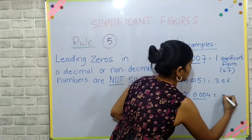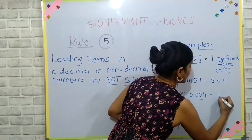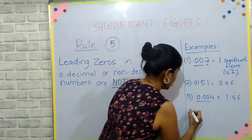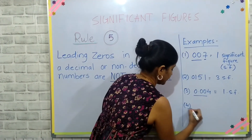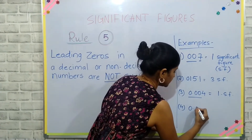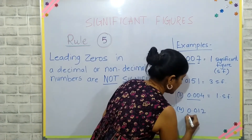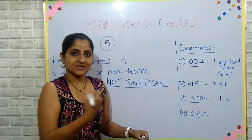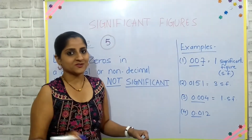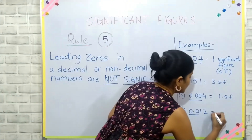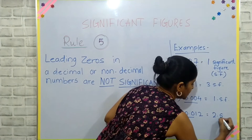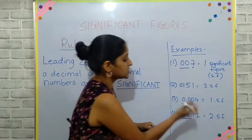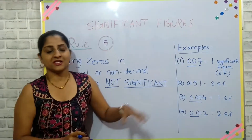In another example, if I write the number 0.012, there are two zeros which are the leading zeros and again they will be considered not significant. That is why this number will have only two significant figures.